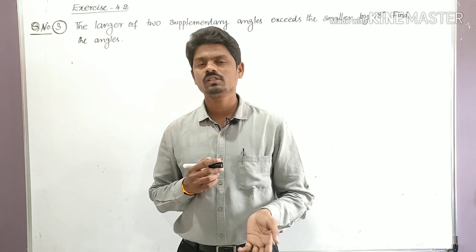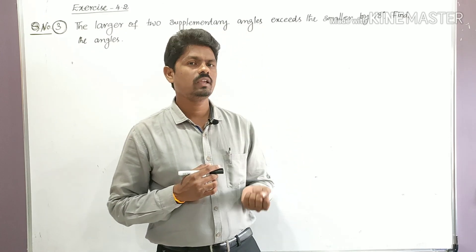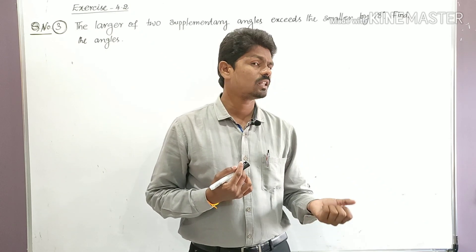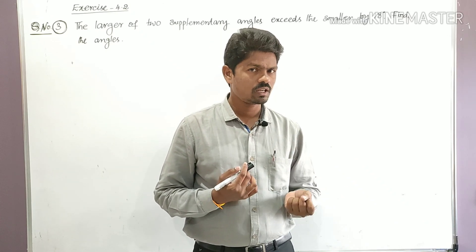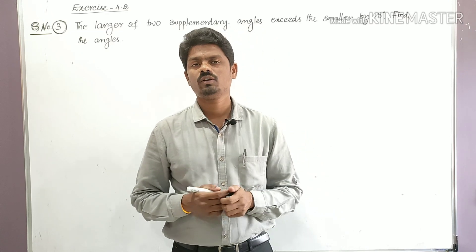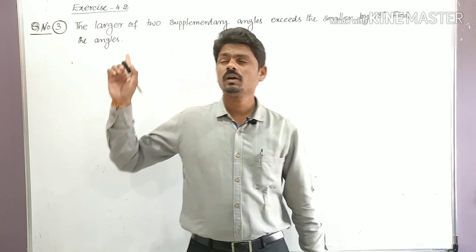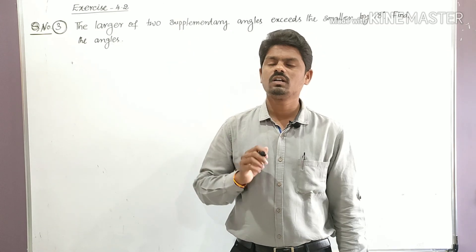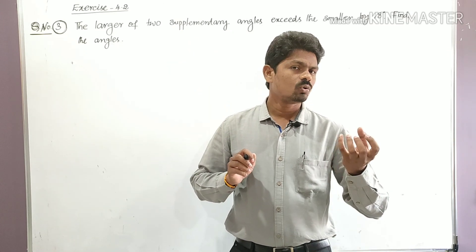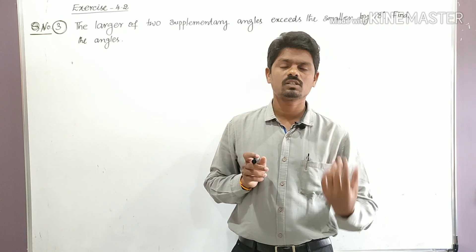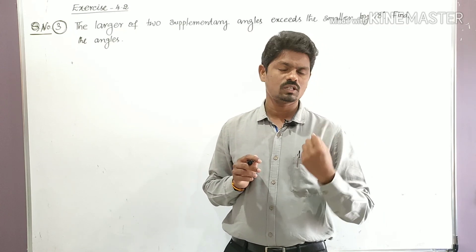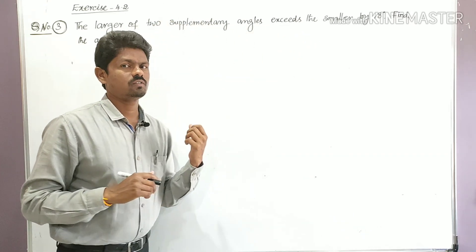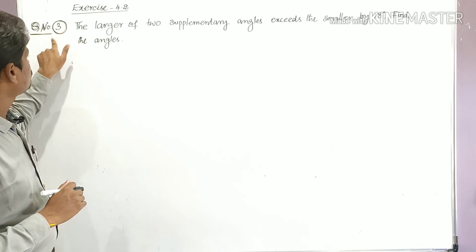In Exercise 4.2, instead of direct equations, a situation is given. From that situation we need to form equations and find the solution. First, identify the unknown quantities — there will be two unknown quantities. Assign them as x and y, then form the equations.